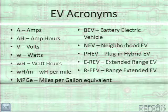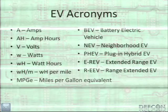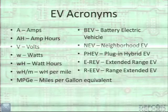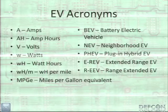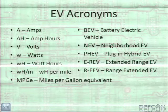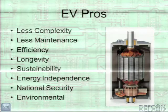Some acronyms you need to know: amps, volts, amp hours (how you measure battery capacity), watts and watt hours (how much power you're getting out of that battery), and watt hours per mile (how much power you need to go somewhere). Miles per gallon equivalent lets you compare to a gas car. A BEV is a battery electric vehicle, usually just called an EV. NEV is a neighborhood EV — short-range or low-speed vehicles. There's plug-in hybrids, which run on gas but can also be plugged in. Extended-range EV and range-extended EV are just things GM made up because they didn't want to call it a hybrid.